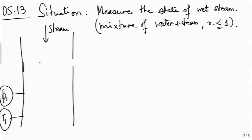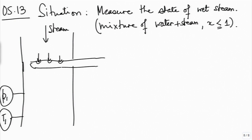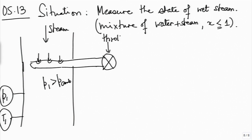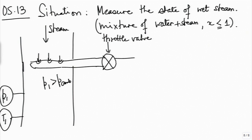What we do is take a sample out—maybe we put a tube with some holes so a representative sample is taken out. It is expected that P1 is greater than P ambient, so if this is connected on the other side to the environment, steam will start flowing through it and a large amount of steam will flow. Since we want only a sample, we put what is known as a throttle valve—a valve which is only partially open, or sometimes a small orifice or a series of orifices. The job of this throttle valve is to provide enough flow resistance so that even with the large pressure difference between P1 and ambient, only a small amount of steam flows through this.